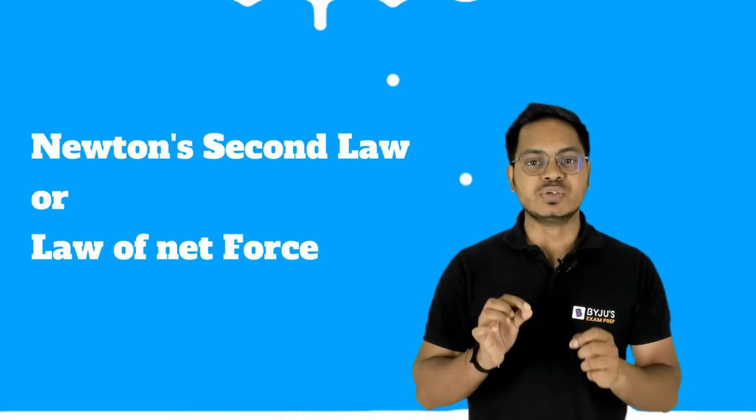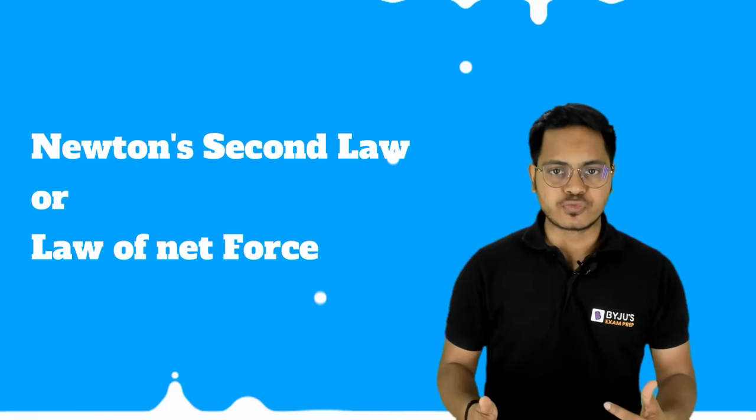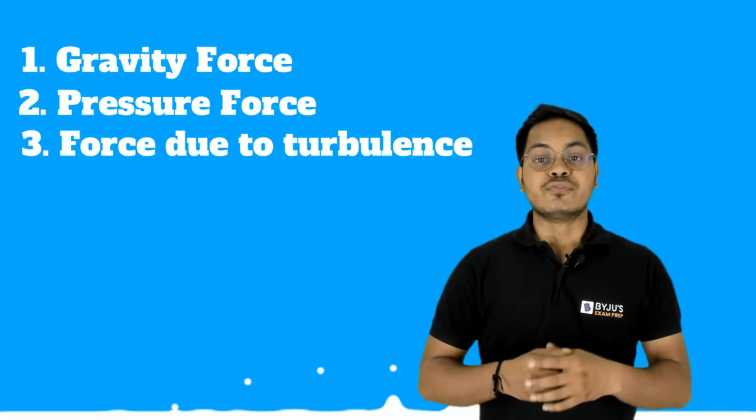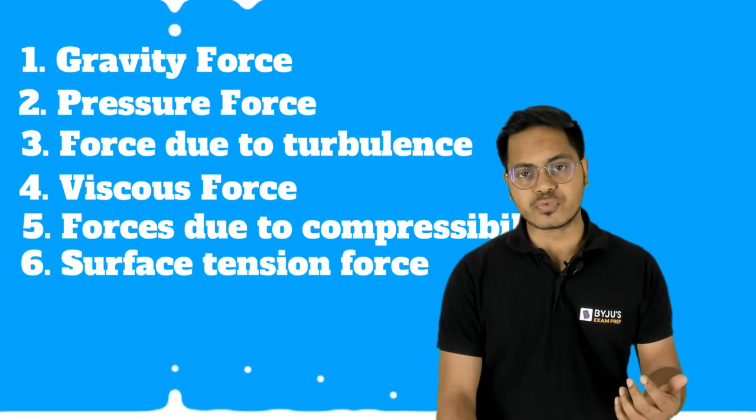There are multiple approaches to understand Bernoulli's theorem, but we will be using Newton's second law — the law of net force. When a fluid is flowing, there are various types of forces acting on it: gravity forces, pressure forces, turbulence forces, viscosity forces, forces due to compressibility, and due to surface tension. If we consider gravity force, pressure force, viscous force, force due to turbulence, and force due to compression together, they give you the net force, which equals mass times acceleration in the direction of that net force.